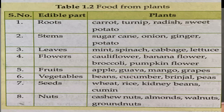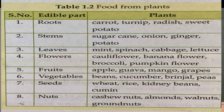The next part of the plant is vegetables. We get different types of vegetables such as beans, cucumber, and brinjal. These are the plants from which we can get fruits and vegetables.